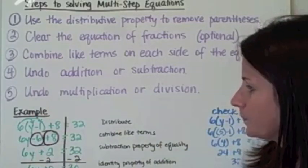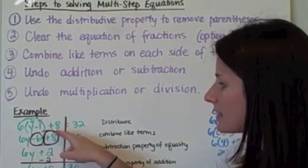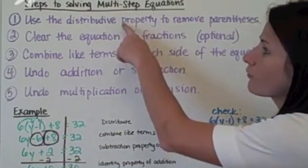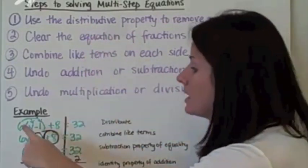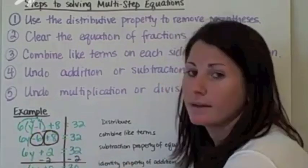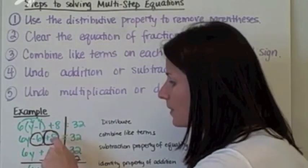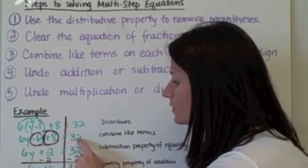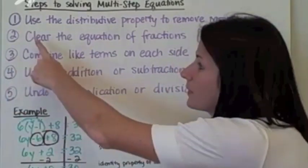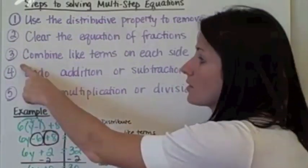First example, six times the quantity of y minus one plus eight equals thirty-two. Referring to our steps, distribute first, six times y minus six times one. This will simplify to six y minus six, and we bring down the plus eight equals thirty-two. Now step two, clear the equation of any fractions. We don't have any, so we go to step three.